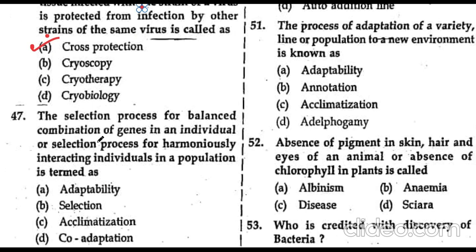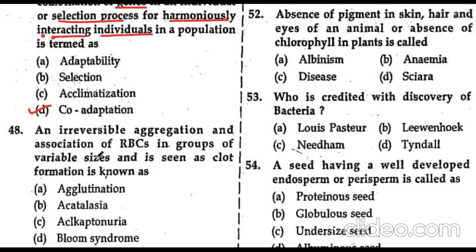Question 47: the selection process for a balanced combination of genes in an individual, or for harmoniously interacting individuals in a population, is termed co-adaptation.